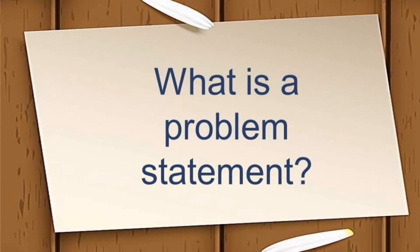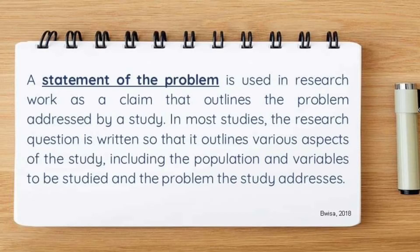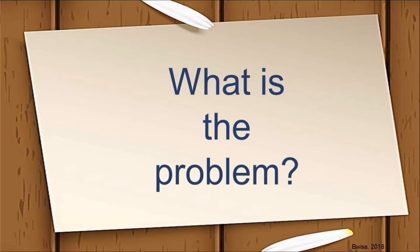First, let's define what a research question, problem statement, or statement of the problem is. A statement of the problem is used in research work as a claim that outlines the problem addressed by a study. In most studies, the research question is written so that it outlines various aspects of the study, including the population and variables to be studied, and the problem the study addresses. The statement of the problem briefly answers the question: What is the problem that the research will address?